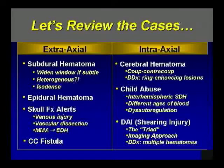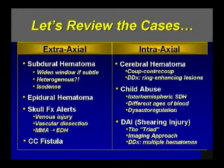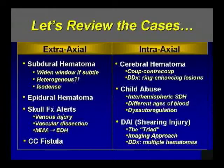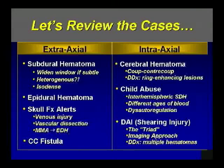In summary: we discussed subdurals — heterogeneous ones may be active hemorrhage or re-bleeding into a pre-existing chronic subdural. Don't forget the isodense subdural. Epidural hematomas with the swirl sign indicate active hemorrhage. Skull fractures and their concerning adjectives. CC fistula. Inside the brain: coup-contra-coup mechanism, trauma in the differential for ring-enhancing lesions. Child abuse is a don't-miss lesion on the boards. Autoregulation failure is especially problematic in children. Shearing injuries — the triad of grade 1, 2, and 3 — and the various MR sequences used, keeping DAI in your differential for multiple hematomas.